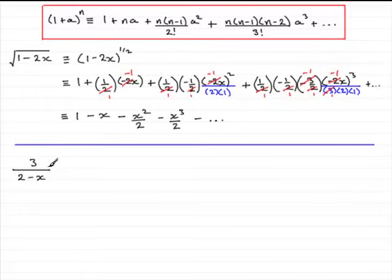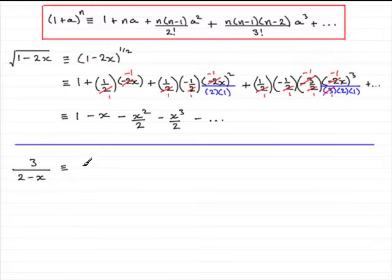Now for the second expression, 3 over 2 minus x. We think of this as 3 times 1 over 2 minus x, and bringing 2 minus x up to the top we get 3 multiplied by 2 minus x to the power minus 1.